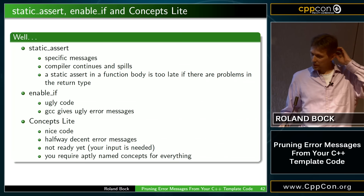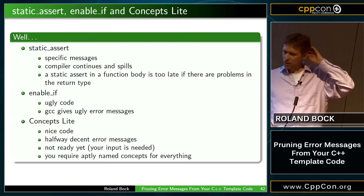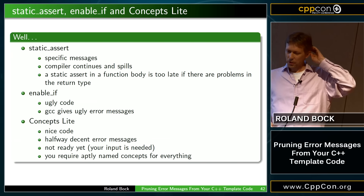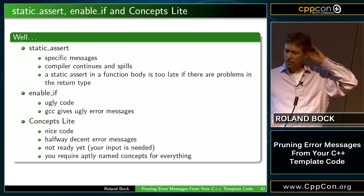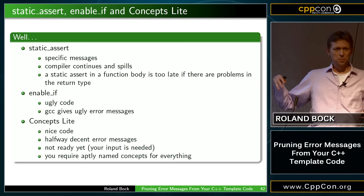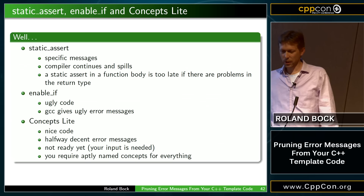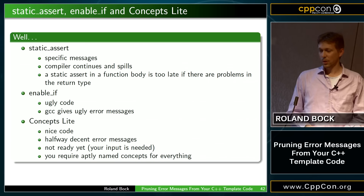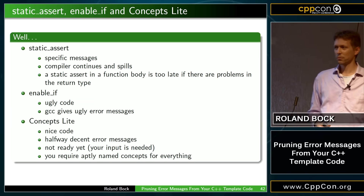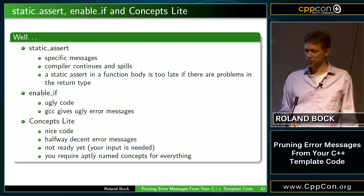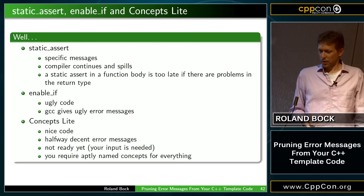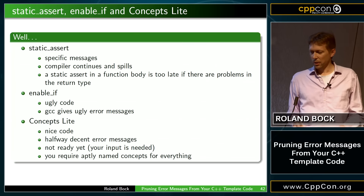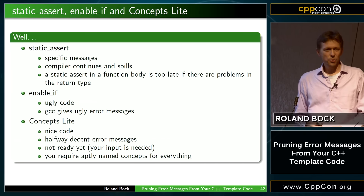Summary of what we've seen: static_assert gives specific error messages, but the compiler continues and spills — and a static_assert in the function body is too late if you have problems in your return type. enable_if gives ugly code and ugly error messages. Concepts light have nice code and halfway decent error messages but aren't ready yet. Compiler developers need your support because there are so many cases nobody can think of everything. You also need well-named concepts, otherwise people won't understand the error messages.